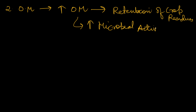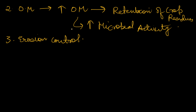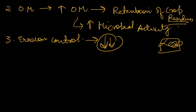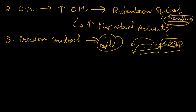Third, erosion control is a major benefit of conservation tillage. It reduces soil erosion by protecting the soil surface with crop residue. In conventional tillage, the upper portions of soil are turned into fine particles, which are easily removed by water and wind, leading to high erosion. But in conservation tillage, the soil structure is maintained and residues remain on top, so there are very less chances of soil erosion.